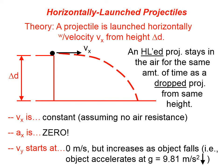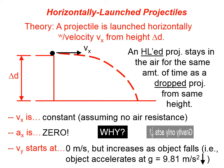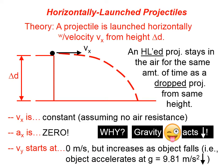Vy starts at zero meters per second. When we launch this projectile, its y velocity is zero — it's not moving up or down at the very instant we launch it. But it increases; it changes as the object falls. Why would that be? Because gravity acts downward. So gravity is going to affect the y velocity of a horizontally launched projectile, or any projectile actually.